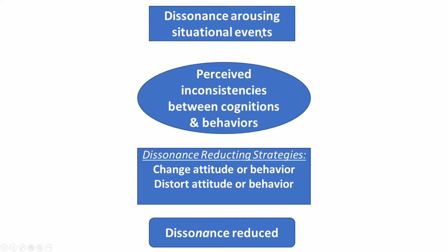This flowchart shows exactly what we were just talking about. When we have dissonance-arousing situational events — where we realize our attitude and behavior don't match — we then engage in some kind of dissonance-reducing strategies where we change either our attitude or behavior, or distort our attitude or behavior. When we do this, we can reduce that feeling of dissonance.